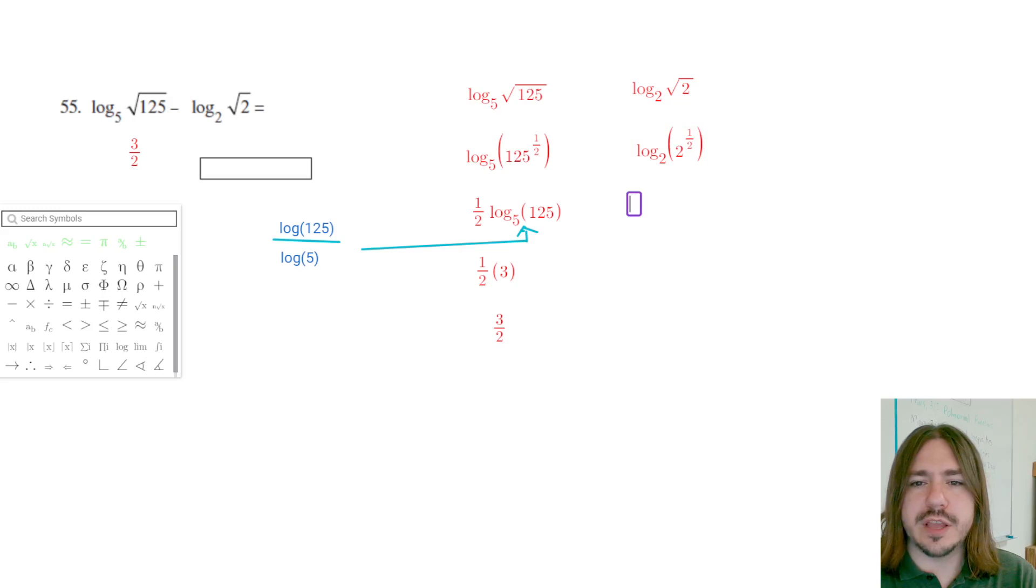And so once again, I can use that power property and rewrite this as 1 half log base 2 of 2. And so when I'm evaluating log base 2 of 2, I'm thinking to myself 2 to what power is 2? And that would be 2 to the first power. So here I have 1 half times 1.